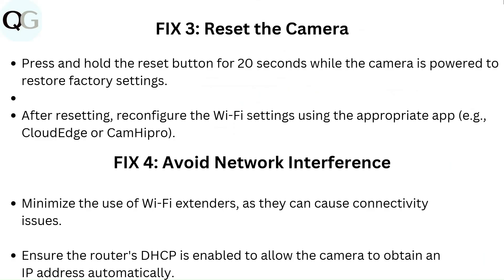Fix 4: Avoid network interference. Minimize the use of Wi-Fi extenders as they can cause connectivity issues. Ensure the router's DHCP is enabled to allow the camera to obtain an IP address automatically.